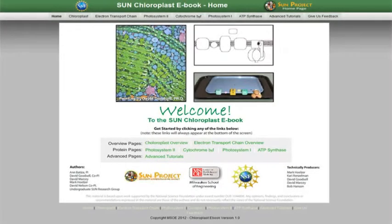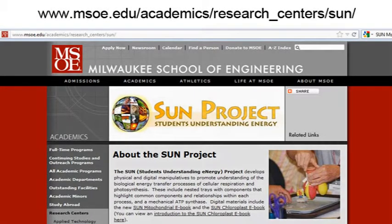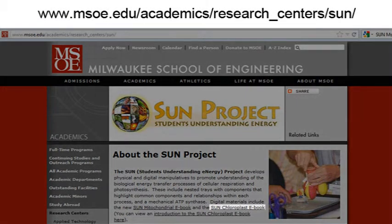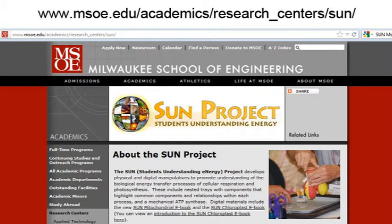The Sun Chloroplast eBook provides information about the how and why of the process of photosynthesis. This is a free resource at the website shown that can be used by undergraduates and their professors. It can also be used by high school biology and AP biology teachers and students in targeted ways.